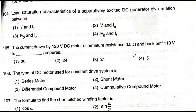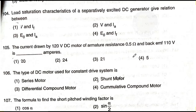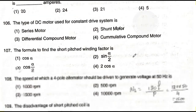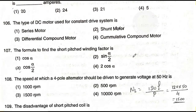Question number 106: The type of DC motor used for a constant speed drive system is — option one: series motor; option two: shunt motor; option three: differential compound motor; option four: cumulative compound motor. The answer is option two — shunt motor. The shunt motor is used for constant speed drive systems.